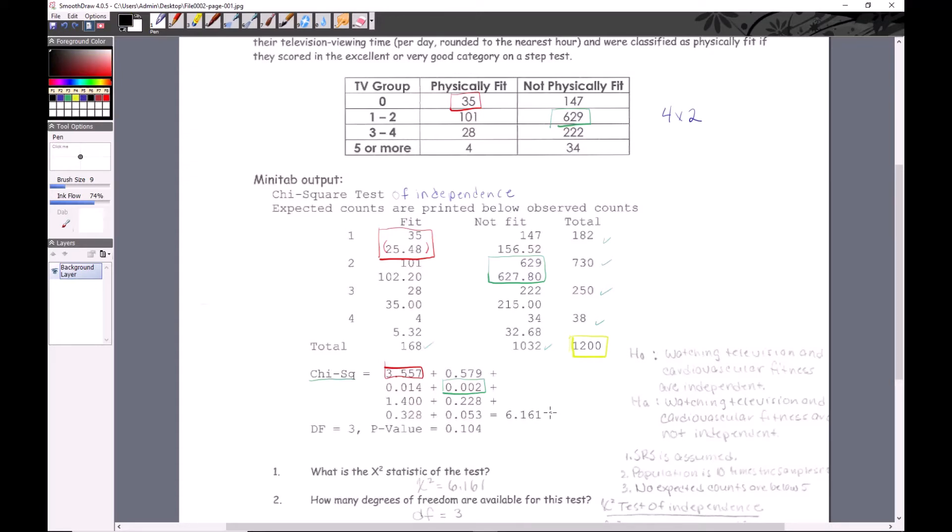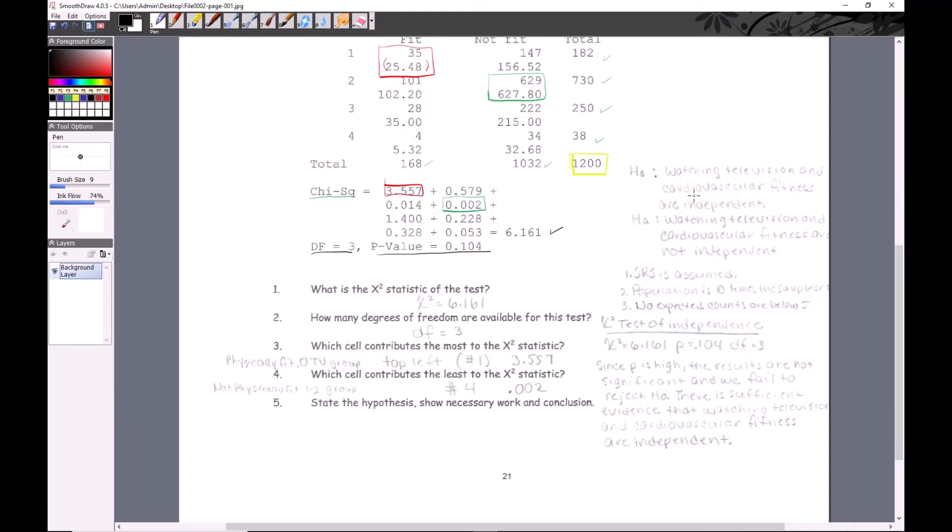Here is the actual chi-square value right there, the degrees of freedom, and the p-value of your test. Really, almost the only thing left to do is write up the test. Don't forget, for the degrees of freedom manually, that would be one less than four is three, one less than two is one, three times one is three, so that checks out.